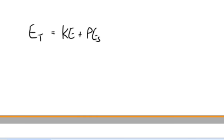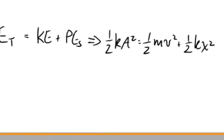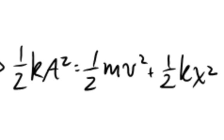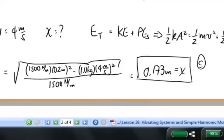The total energy equals kinetic plus potential: one half kA squared equals one half mv squared plus one half kx squared. I know every number in this equation except x. Eliminating the common factor of one half, moving the mv squared term to one side, dividing by k, and taking the square root in one step, I find the position where the object moves at 4 meters per second is 17 centimeters from the equilibrium position — both on the positive side and on the negative side.